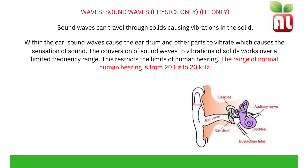Sound waves can travel through solids, causing vibrations in the solid. Sound does not travel through a vacuum — a vacuum is one in which there are no particles able to vibrate and carry the sound. Within the ear, sound waves cause the eardrum and other parts to vibrate, which causes the sensation of sound. The conversion of sound waves to vibrations of solids works over a limited frequency range, which restricts the limits of human hearing. The normal hearing range is from 20 hertz to 20 kilohertz.